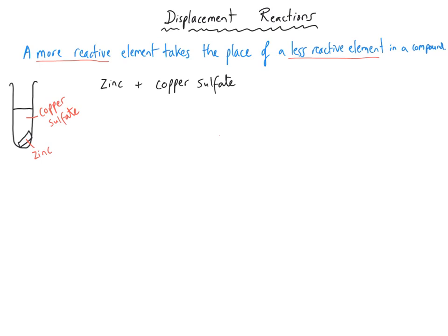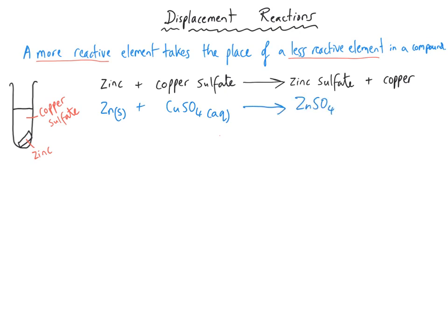The zinc turns into zinc sulfate and the copper sulfate turns into copper. Writing symbol equations: zinc solid reacts with copper sulfate solution (Aq), turning into zinc sulfate solution (Aq) and solid copper (Cu). Now let's look at what's happening in terms of redox. Copper combines with sulfate ionically — the copper ion is a 2+ ion and the sulfate ion is a 2- ion. The copper begins as a 2+ ion in the reactants and finishes with no charge — copper zero. Since electrons are negatively charged, copper must have gained electrons.